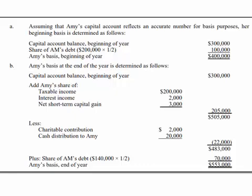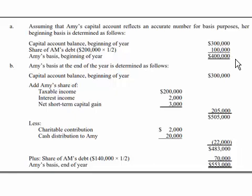To answer Part A, assuming that Amy's capital account reflects an accurate number for basis purposes, her beginning basis would be determined as follows. We take the capital account at the beginning of the year, $300,000, and then we take half of AM's debt, which was $200,000 times one-half. So Amy's basis at the beginning of the year is $400,000.